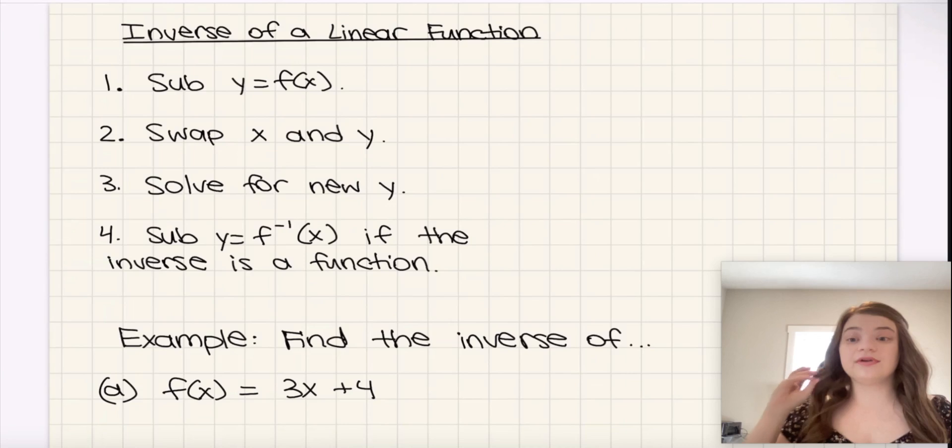Now, when it comes to linear functions and finding the inverse, every single inverse of every single linear function is always a function, except for horizontal lines, because the inverse of a horizontal line would be a vertical line, and that fails the vertical line test. In fact, it fails it an infinite many of times. However, any other line that is not a horizontal line will have an inverse that is indeed a function as well.